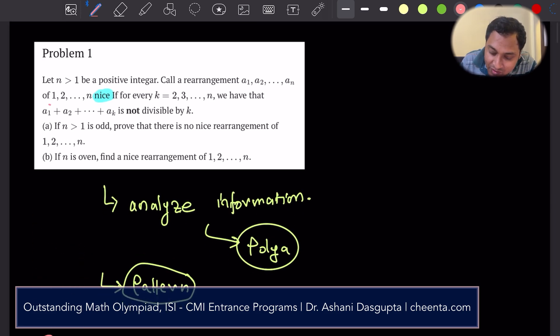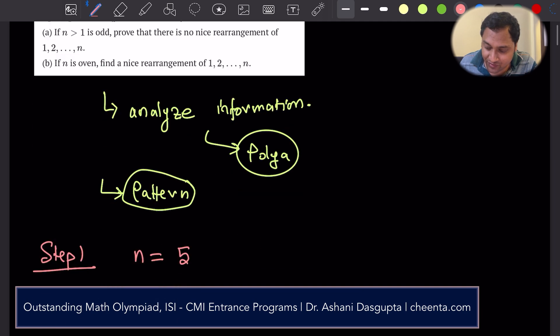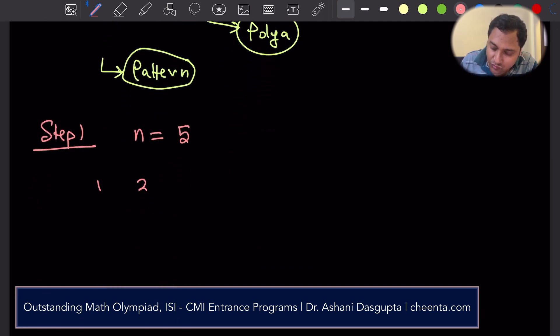That it's an arrangement of the numbers 1 to n. What is an arrangement? It's a1 to an. So we have the numbers 1, 2, 3, 4, 5. We want to rearrange these numbers. So maybe one rearrangement is 2, 3, 1, 5, 4. So then this is a1, this is a2, this is a3, this is a4, this is a5.